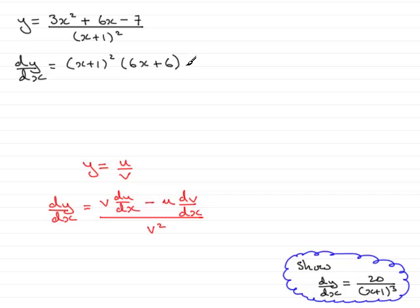Then we've got minus, and now we have u, the top of the fraction, so that's 3x squared plus 6x minus 7, and that is being multiplied by dv by dx, the differential of the denominator.